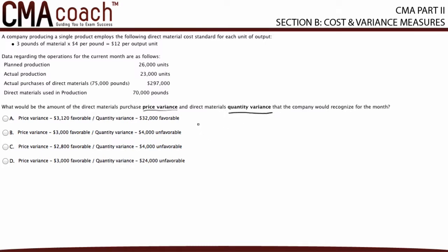The purchase price variance is calculated as: (actual price minus standard price) times actual quantity. Since the purchase price variance is required, the actual price is the price per unit of the units purchased — not the price per unit of units used — and the actual quantity is the number of units purchased. The actual price is $3.96 per pound, calculated by dividing $297,000 by 75,000 pounds.